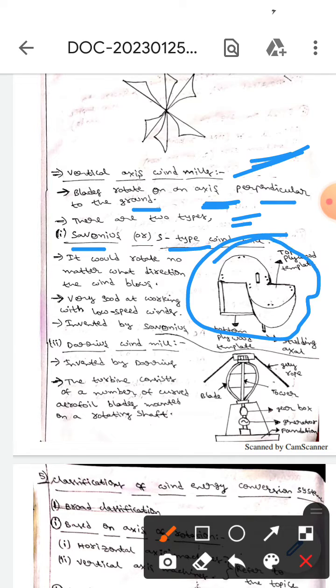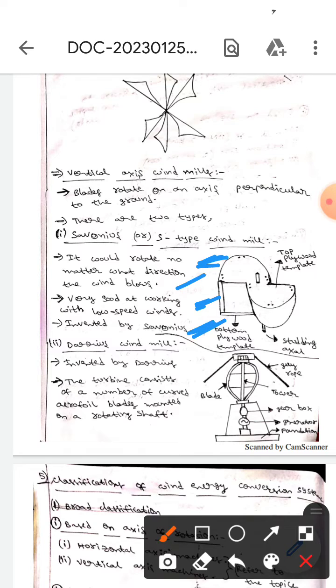This diagram represents the Savonius windmill. It will rotate no matter what direction the wind blows. It is very good at working with low speed winds. It is invented by Savonius.